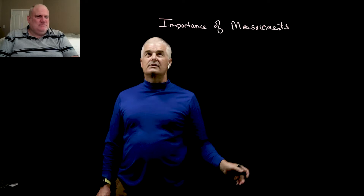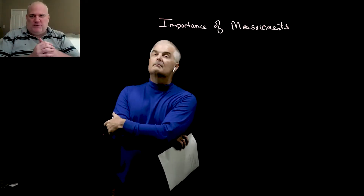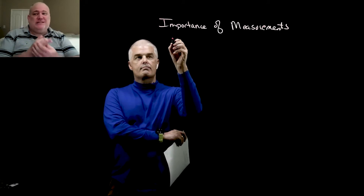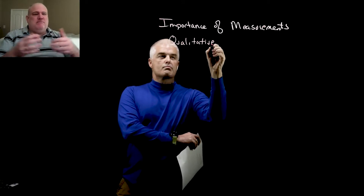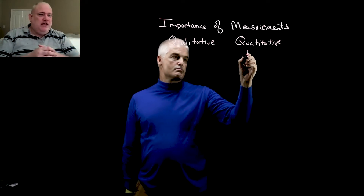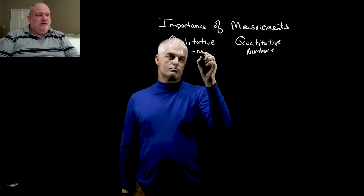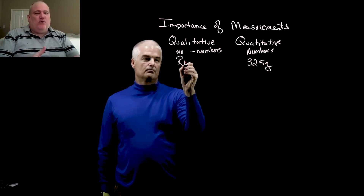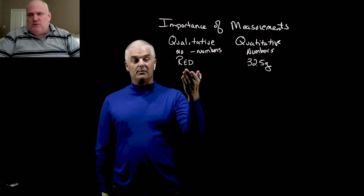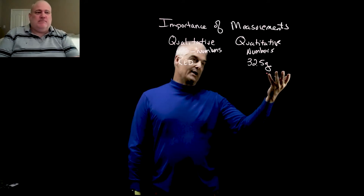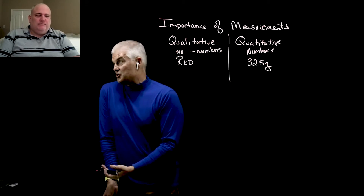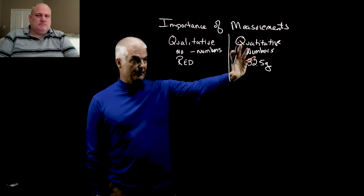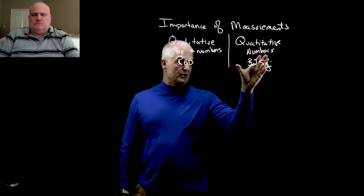Today we're going to talk about measurement. We talked mostly about matter in the beginning set of videos, but now we're getting a little mathy. Let's talk about how we make observations. Sometimes we make an observation that has a number in it, and sometimes we don't. If there's a number involved, we call those quantitative. If there's not a number involved, we call those qualitative. For example, 'I have seven guinea pigs' is quantitative; 'red' or 'smelly' would be qualitative. '32 and a half grams' is quantitative — number versus not a number.